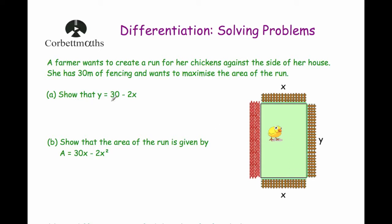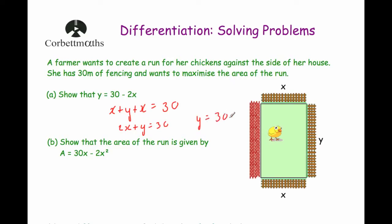Part A says show that Y equals 30 subtract 2X. She's got 30 metres of fencing and we want to use all of it. The three sides of the rectangle where she uses fencing add up to 30 metres: X plus Y plus X equals 30. So X plus X is 2X, plus Y equals 30, and when we subtract 2X from both sides we get Y equals 30 subtract 2X.